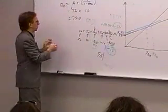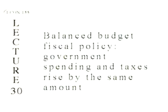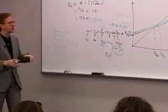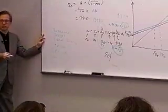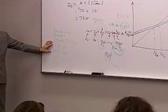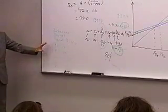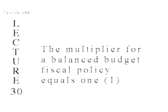This is called a balanced budget fiscal policy — increase G by 10 and increase T by 10. I don't mean we have a balanced budget overall. I mean a policy where government spending and taxes change at the same time, in the same direction, by the same amount, leaving the budget balance unchanged.